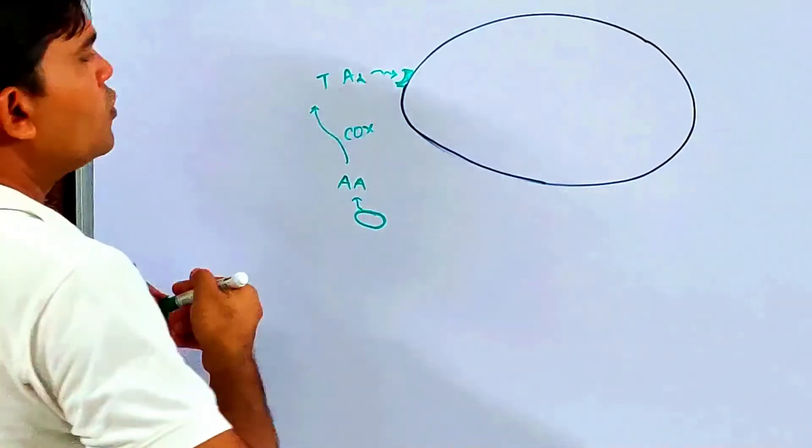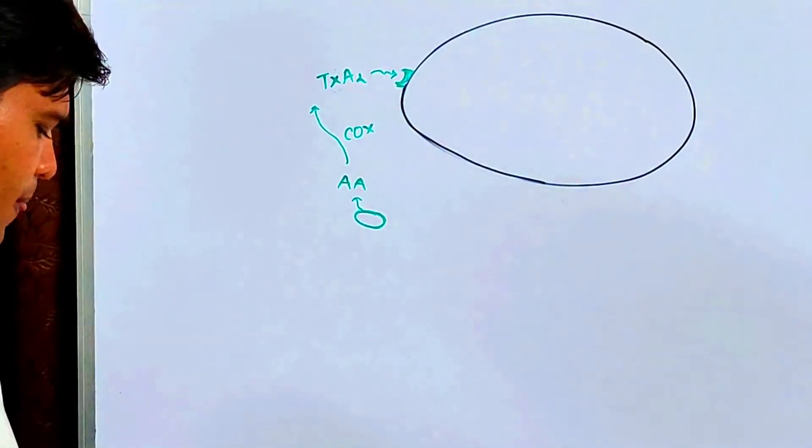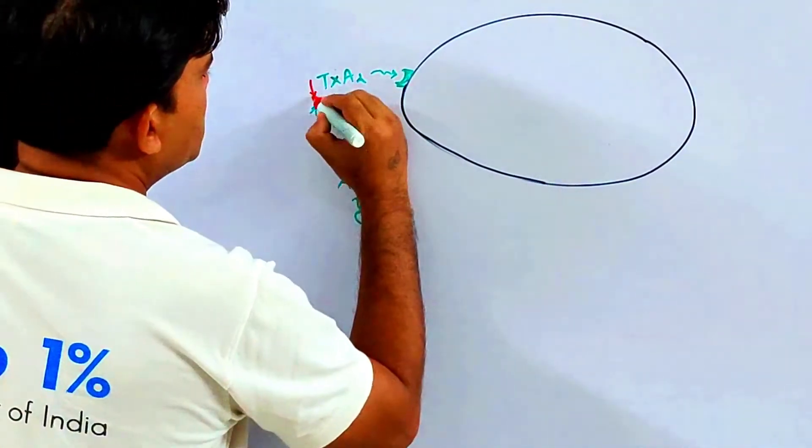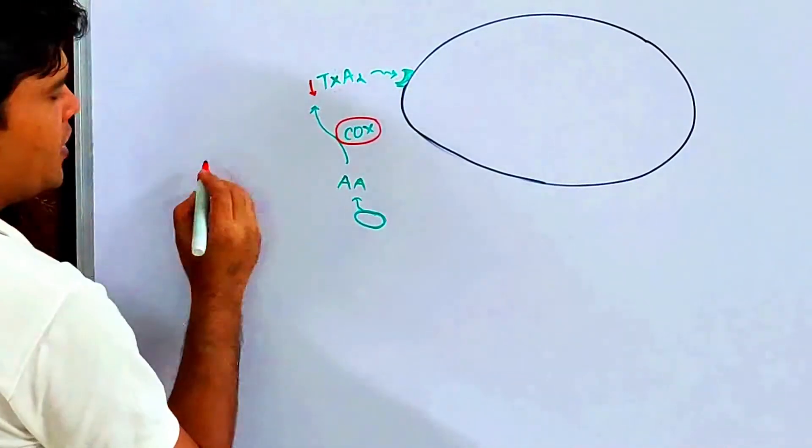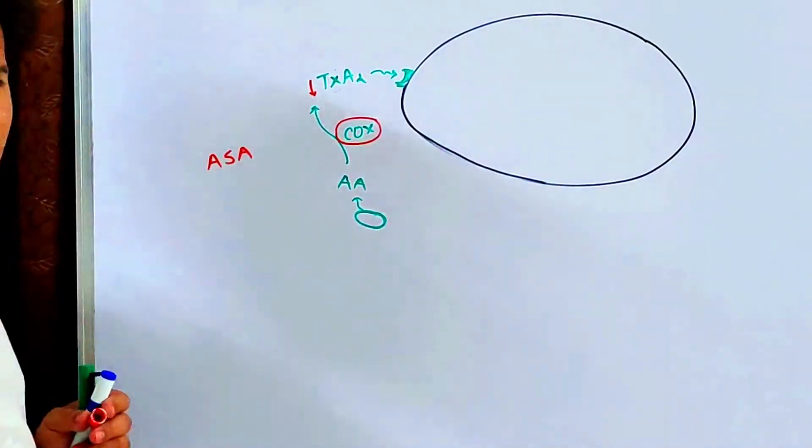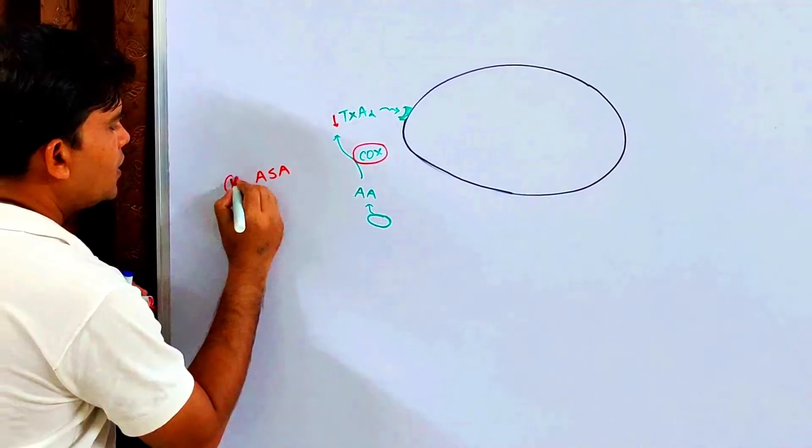And then it activates and creates the aggregation process. That's why thromboxane A2 is basically a platelet aggregator. And the drug used, which basically reduces the production of thromboxane A2 by inhibiting this enzyme, is acetyl salicylic acid, right? So this is the first group of drugs.